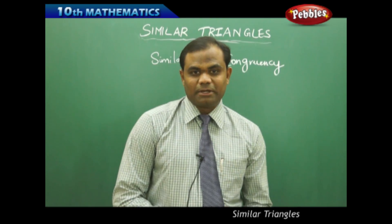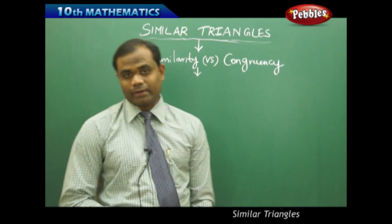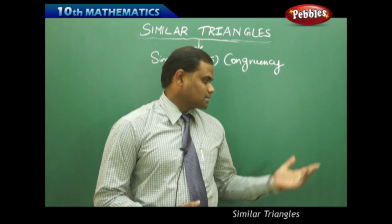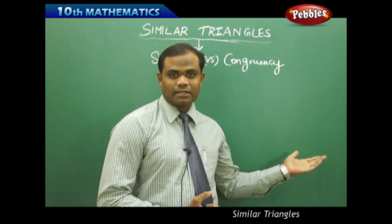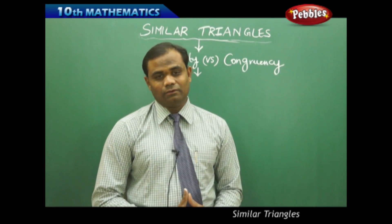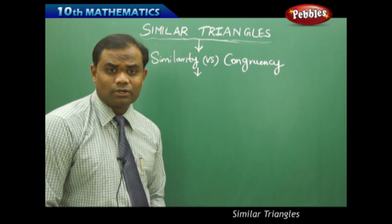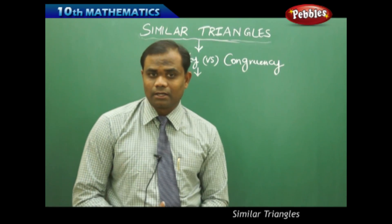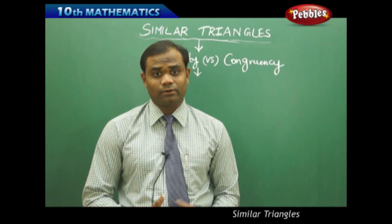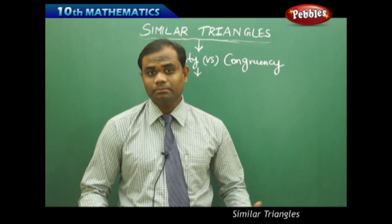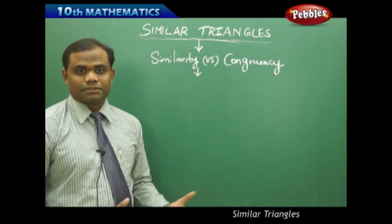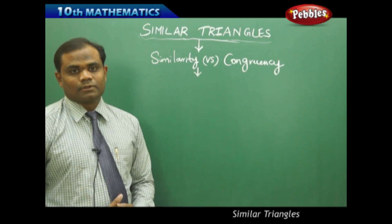So what is the difference between similarity and congruency? Similarity is what we have discussed in the previous session. Then what is congruency? How are they different? When do we say two objects are similar, or when do we say they are congruent? Or is similarity and congruence one and the same? This is what we are going to identify in this session.